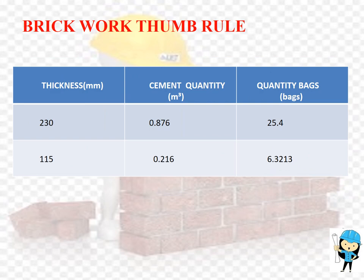Now we are going to see the thumb rule for brick work. We have taken two thicknesses of bricks: 230 mm (full size brick) and 115 mm (half size brick). For 230 mm thickness of brick, the quantity of cement required is 0.870 m³, which is 25.4 bags. For 115 mm thickness of brick, the quantity of cement required is 0.216 m³, which is 6.3213 bags.